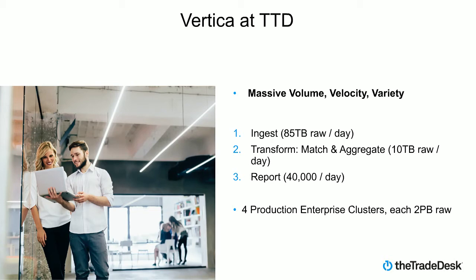We have about 40,000 reports per day — that's actually an older number; it's probably closer to 50 or 55,000 reports per day at this point. It's probably a pretty common use case for Vertica customers. It's maybe a little different in the sense that most of the reports themselves are batch reports — it's not a user sitting at a keyboard waiting for results. We have a workflow where we do the ingest, we do the transform, and then once all the data is available for a day, we run reports on behalf of our customers on that daily data. Then we send the reports out via email or drop them in a shared location, and they look at the reports at some later point in time.